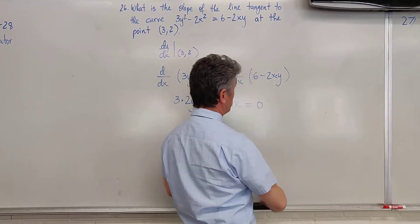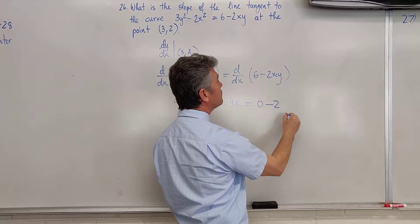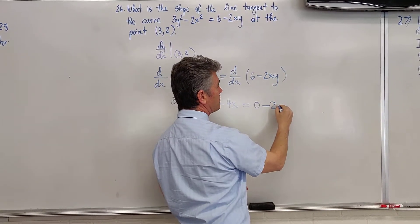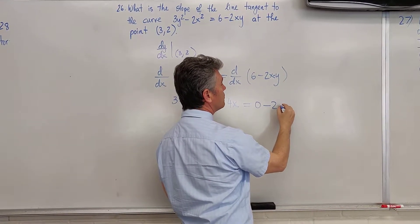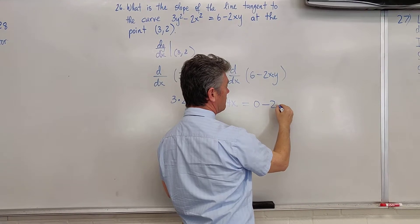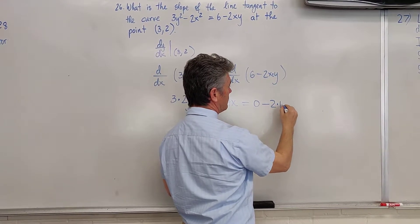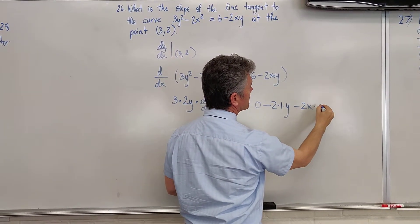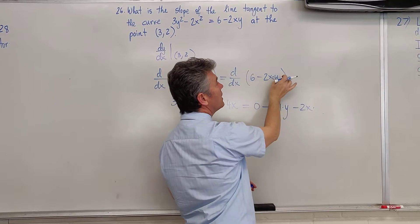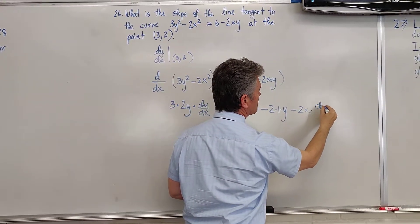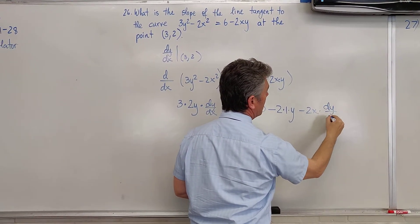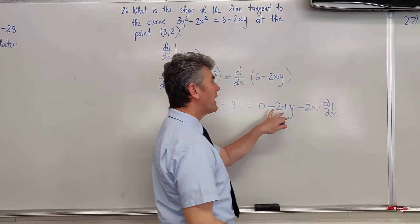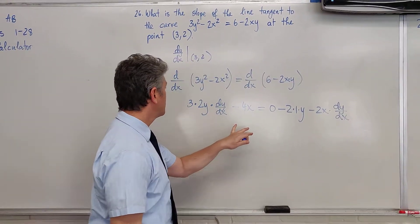Let me redo that. Minus 2: the derivative of x is 1, minus 2 times 1 times y, and then minus 2x times the derivative of y, which is just dy/dx.